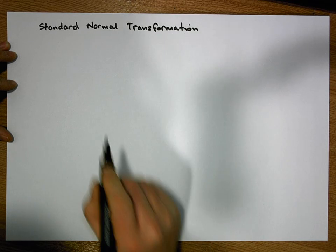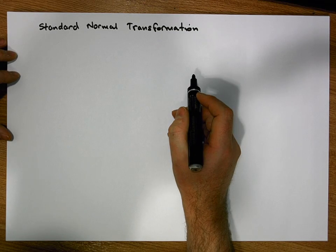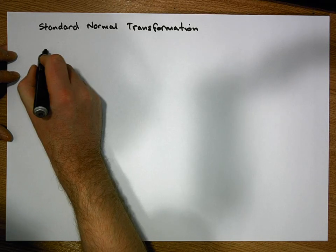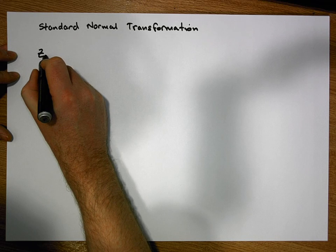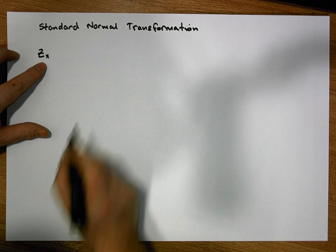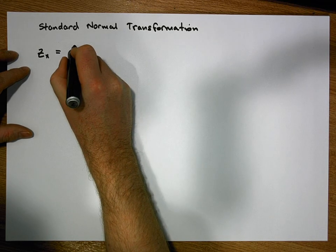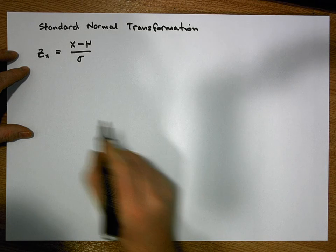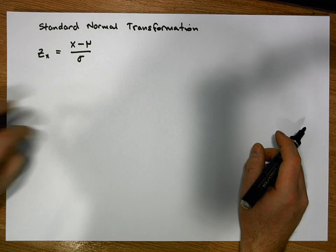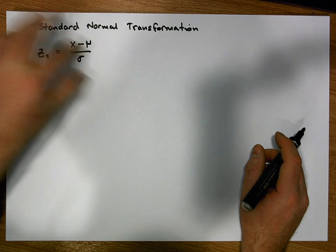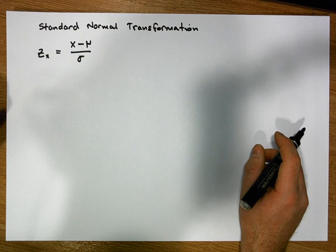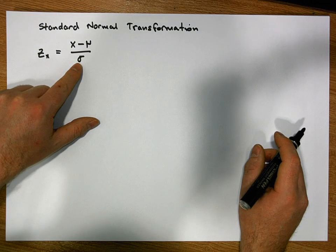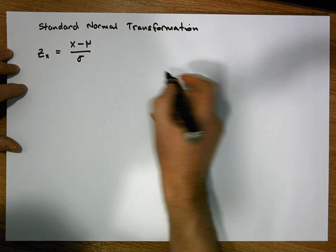Let's recap: we define the standard normal transformation through a particular formula. That formula says that the z-score associated with a particular observation x is equal to the difference between that observation and the population mean, divided by the standard deviation. Let's try to get an understanding of what this formula does to a distribution that has mean μ and standard deviation σ.